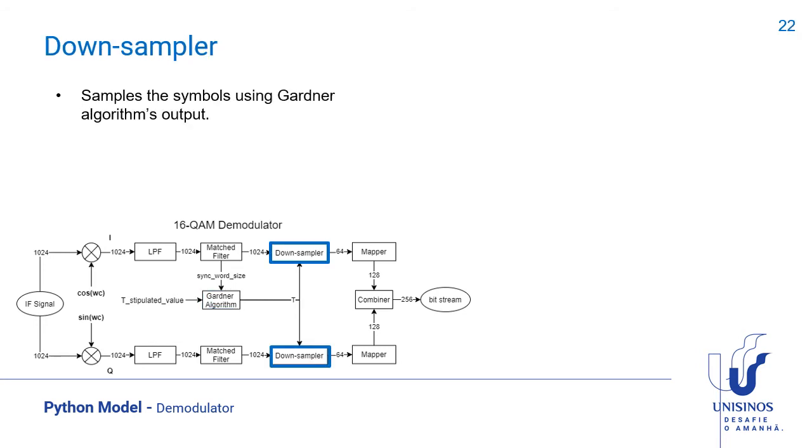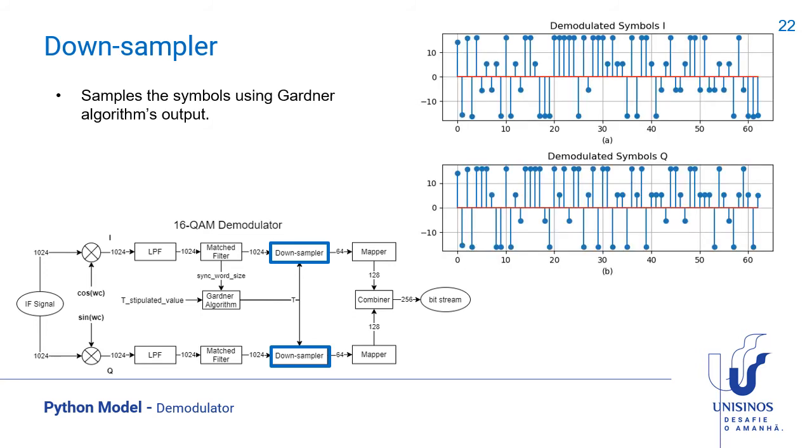Using the information from the Gardner algorithm, we can sample the signal in the right time. This is the in-phase symbols and the quadrature symbols.